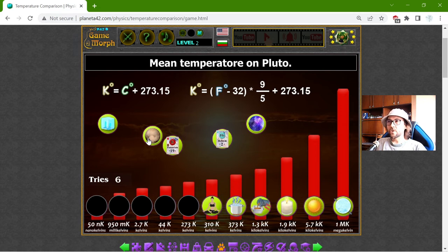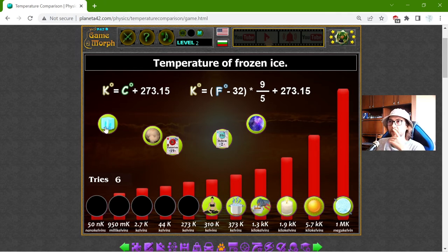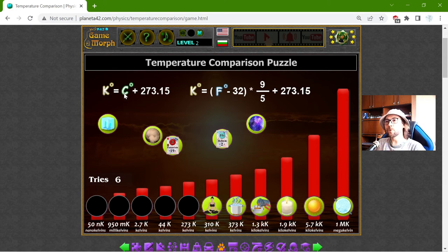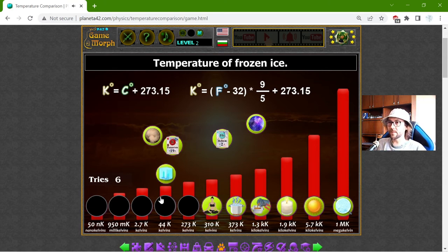Alright, the mean temperature on Pluto and the temperature of cosmic background. Temperature of frozen ice. That should be 0.0 degrees Celsius, which means 273 KK.